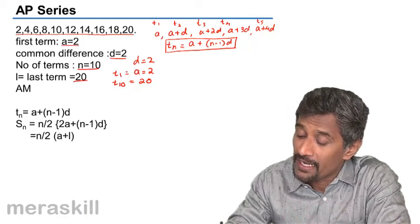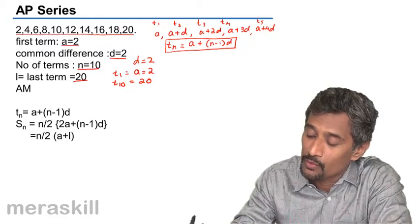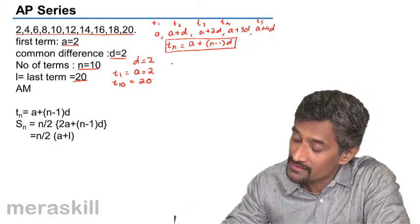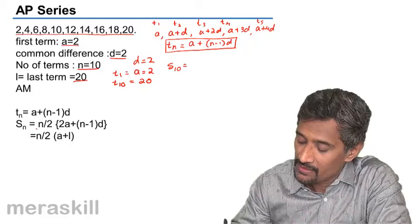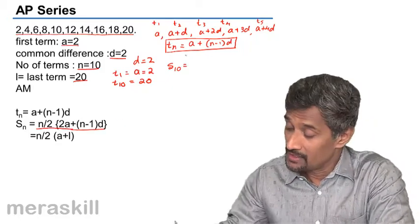Then, suppose you need to find the sum of all these numbers, 2, 4, 6, 8, 10, 12, 14, 16, 18, 20. In that case, the sum of all these, that is sum in this case of a 10 term, S10 is given by N by 2 into 2A plus N minus 1 into D.